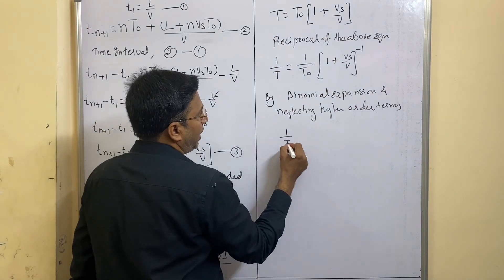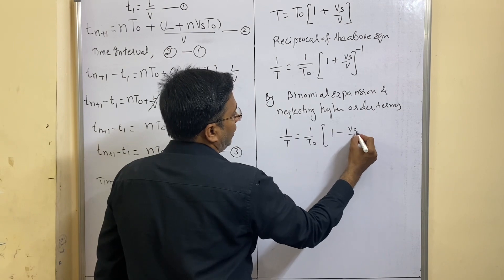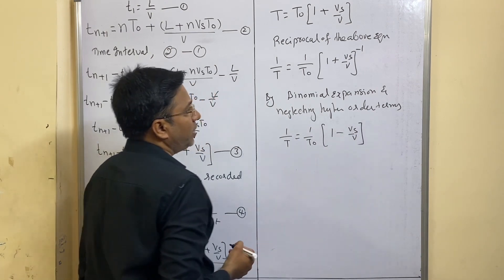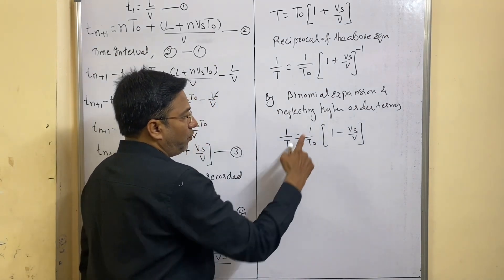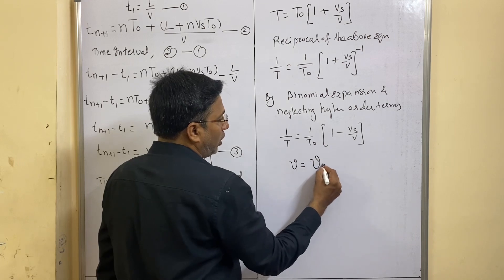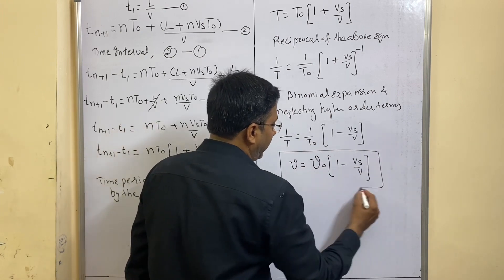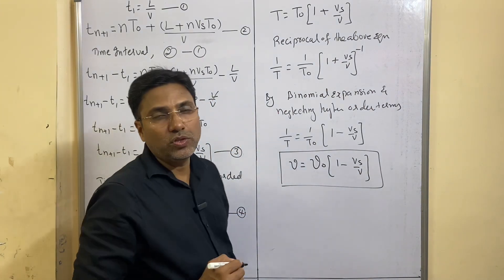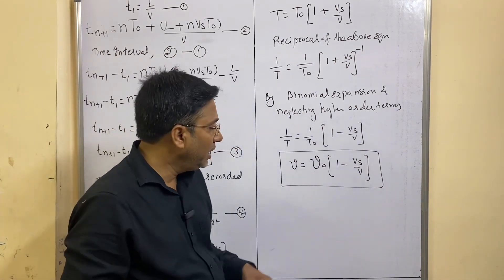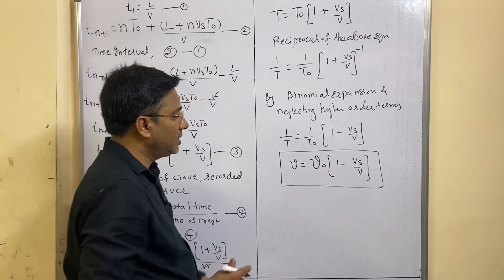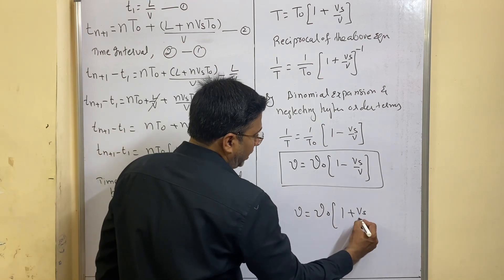By applying the binomial expansion and neglecting higher order terms, the equation becomes: 1/T = (1/T0)(1 − Vs/V). Since 1/T is frequency, we can write μ = μ0(1 − Vs/V). This is the final equation of apparent frequency when the source is moving away from the observer. If the source is moving towards the observer, then in this formula we write plus instead: μ = μ0(1 + Vs/V).